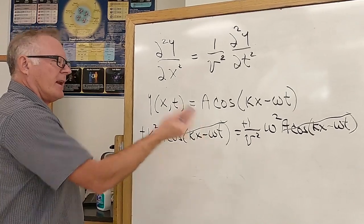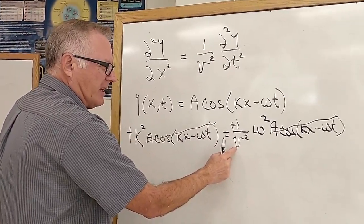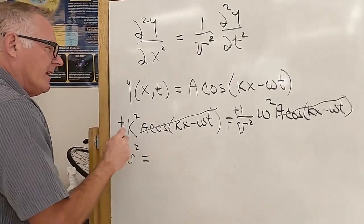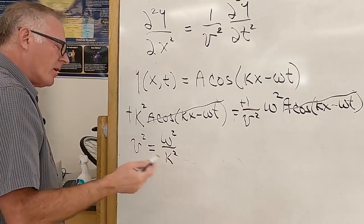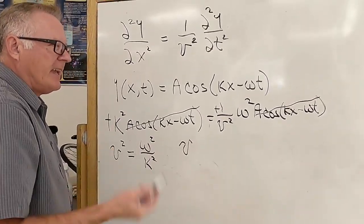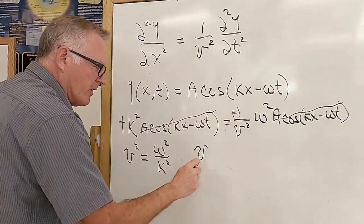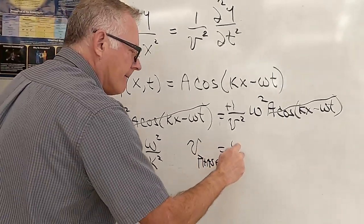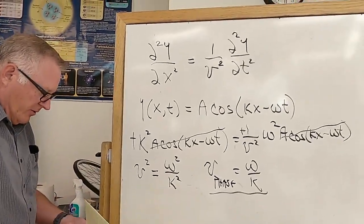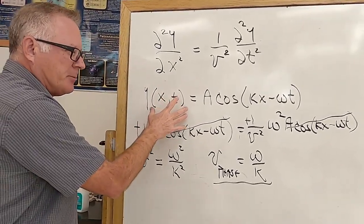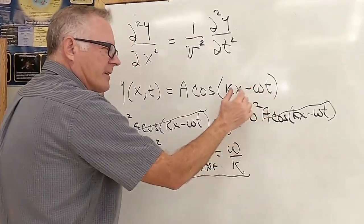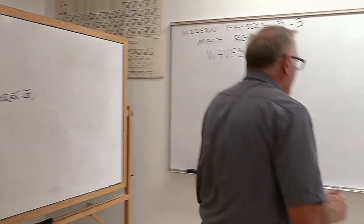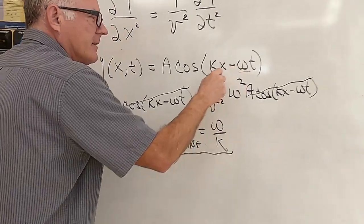Canceling the A cosine terms and the two minus signs, we get k² = ω²/v², so v² = ω²/k², giving v_phase = ω/k. This is called the phase velocity — the speed at which the crest moves. Looking at the wave solution, the speed is always the coefficient in front of t divided by the coefficient in front of x.